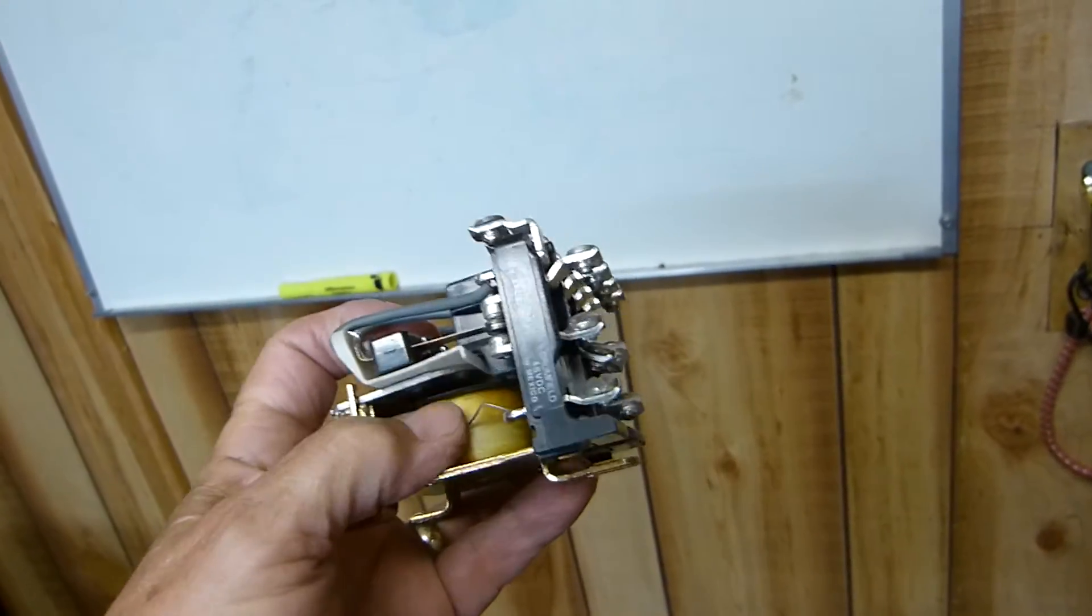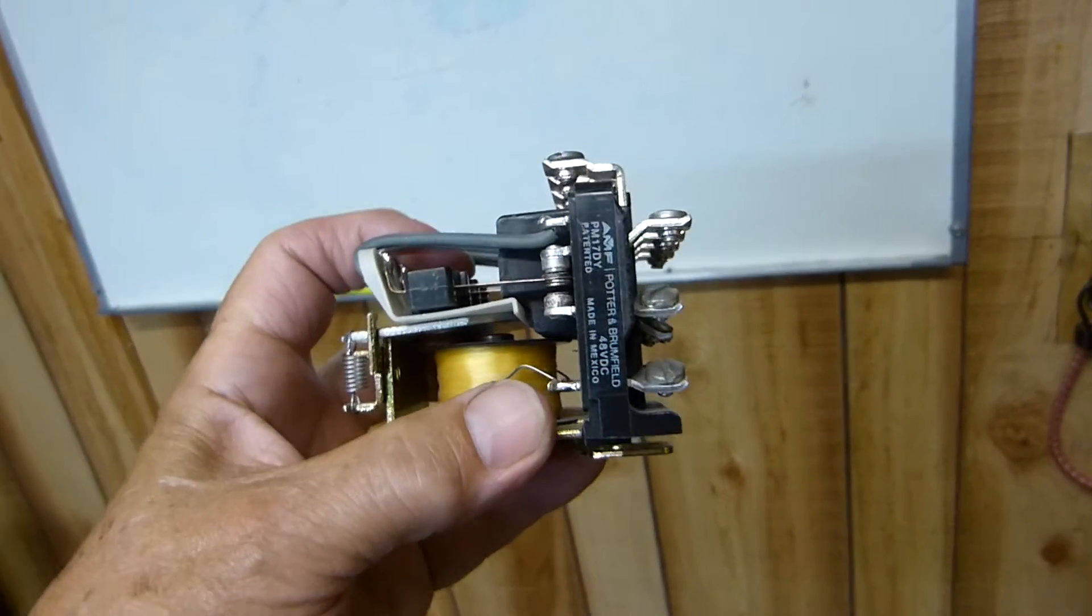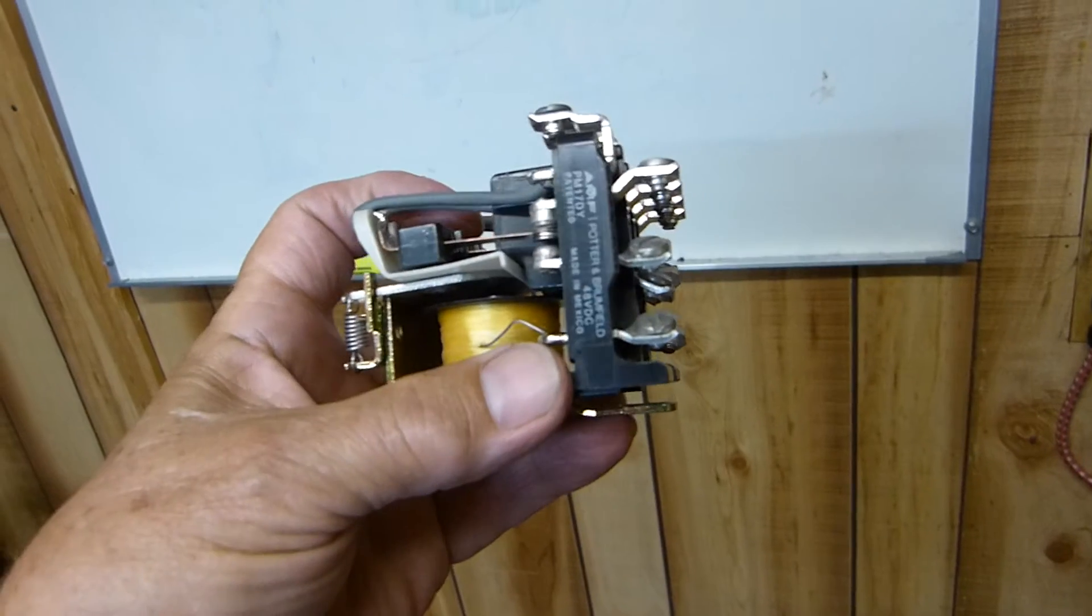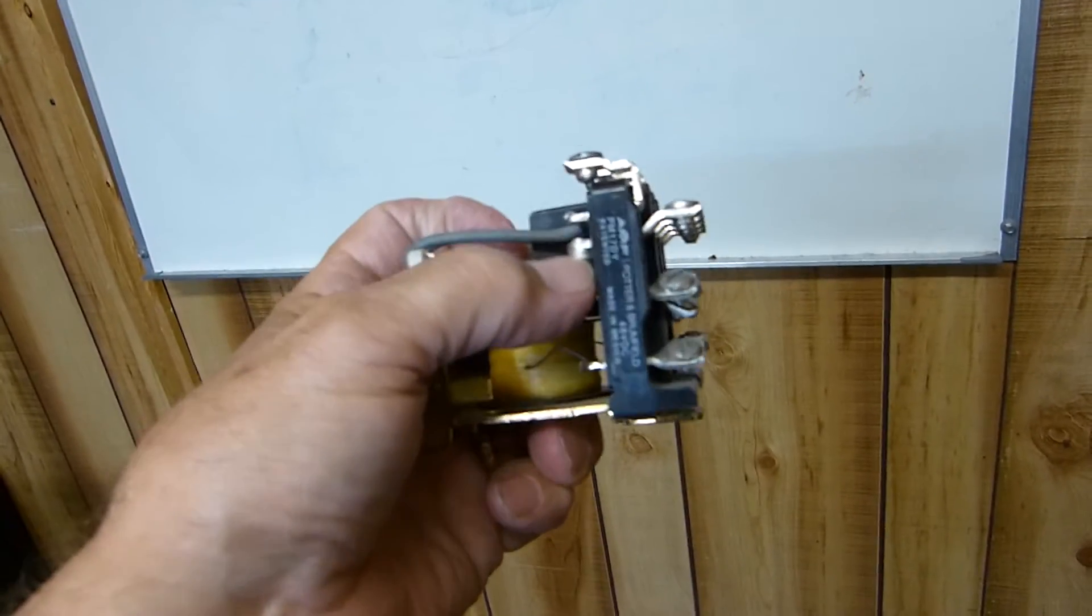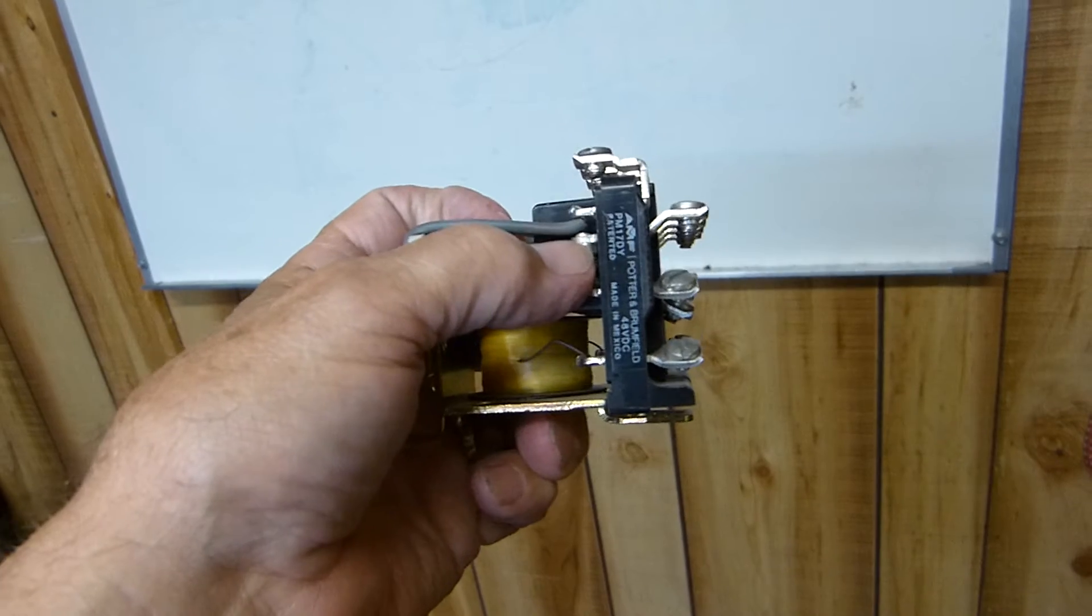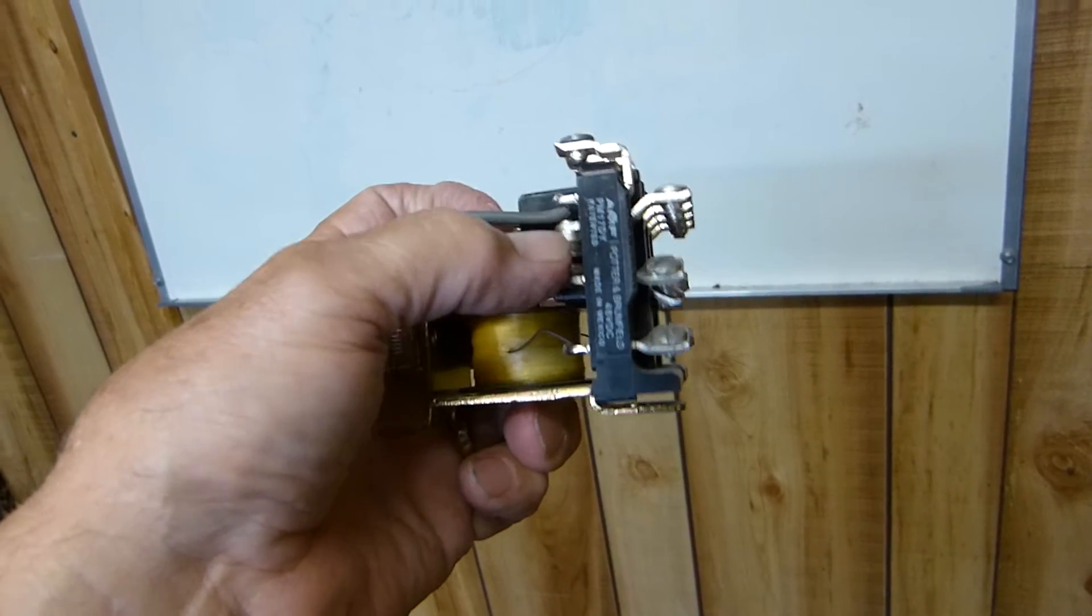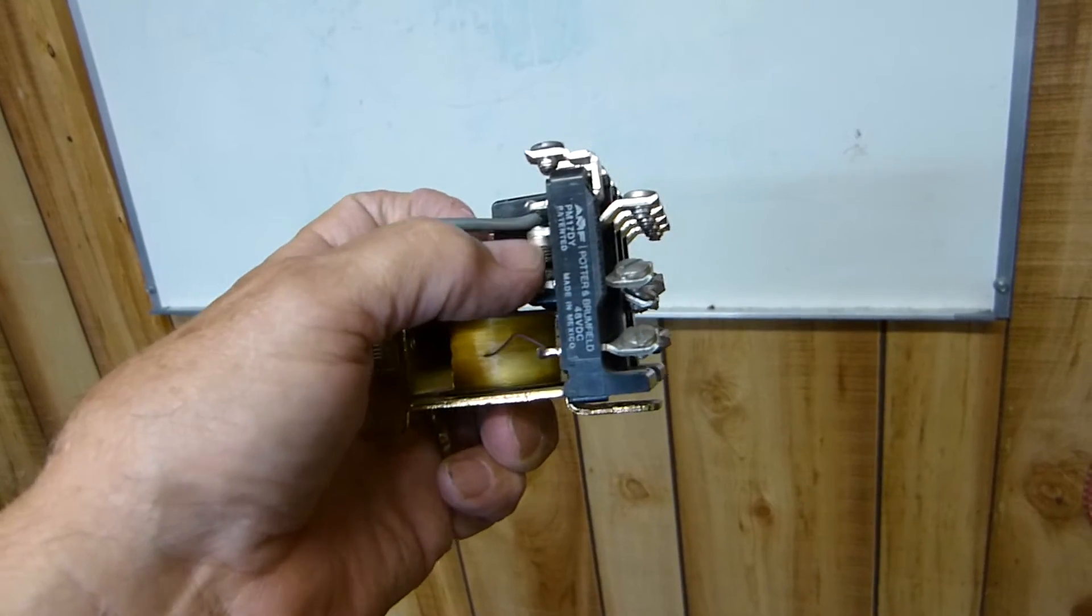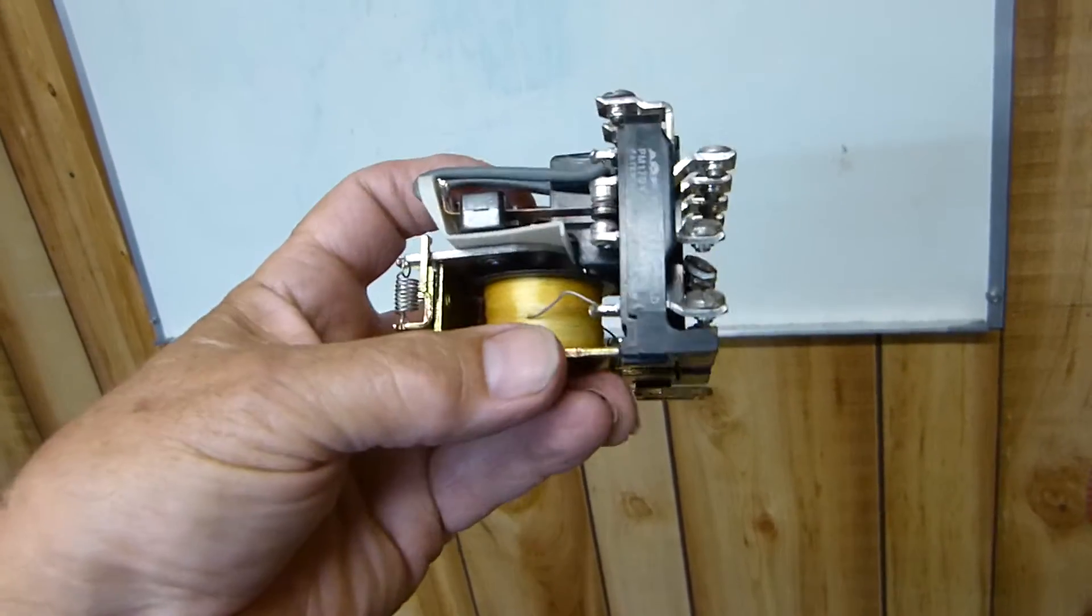First of all, here's a very simple relay. This is a 48 volt coil. I'll show you how they work. This right here, the moving part, is called the common. And this one up here where it's touching while it's just in its non-installed state, this is called the normally closed contact. This is called the normally open, NC and NO.